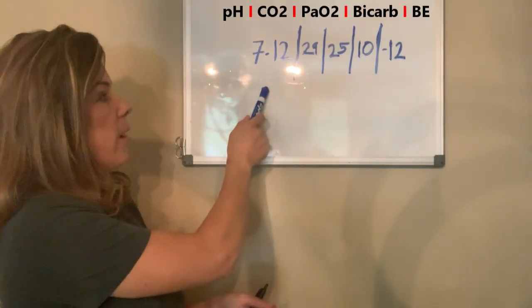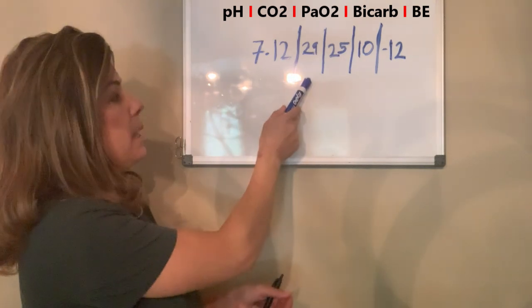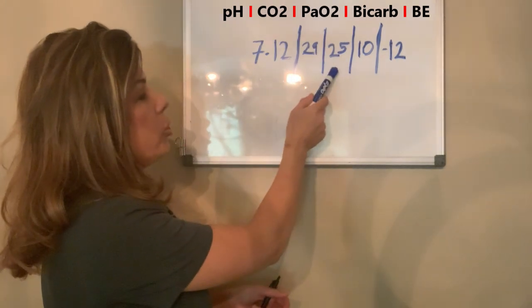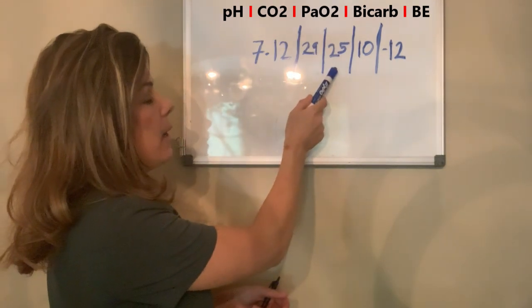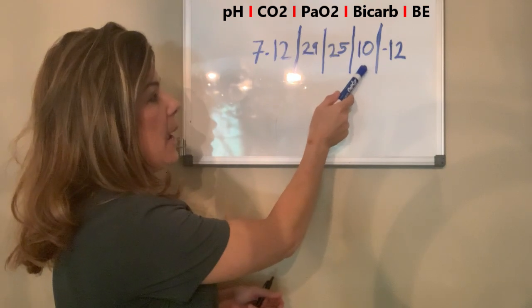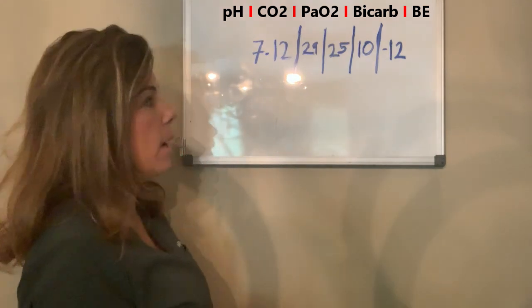These are the results of the blood gas: a pH of 7.12, a CO2 of 29, an oxygen of 25, a bicarb of 10, and a base of minus 12.